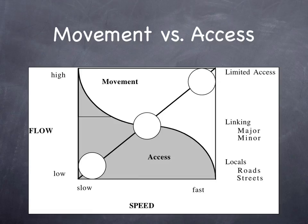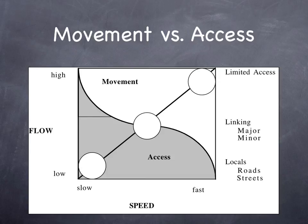So we can see this is a trade-off between movement and access. On the x-axis, we have speed — slow speed to fast speed — and on the y-axis, we have flow — low flow to high flow. Links which are slow tend to have low flow, and links which are fast tend to have high flow. Those fast, high-flow links are limited access, while those slow, low-flow links are neighborhood streets. We arrange our routes along the diagonal, ideally, so that we have trade-offs between movement and access.